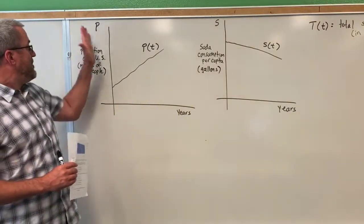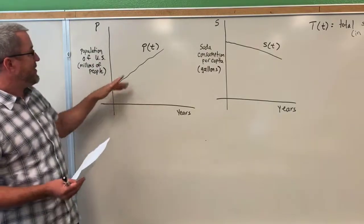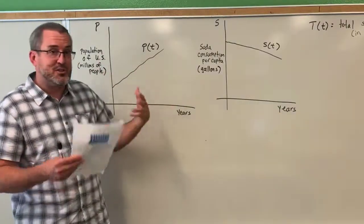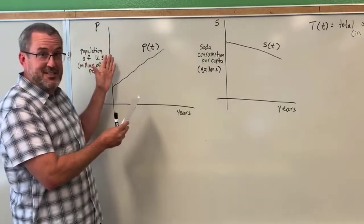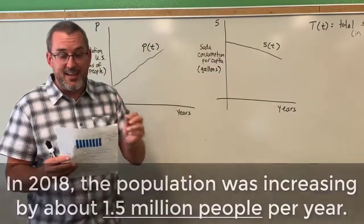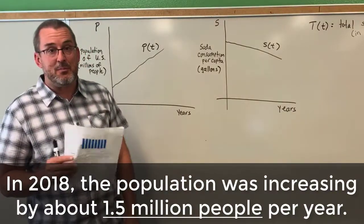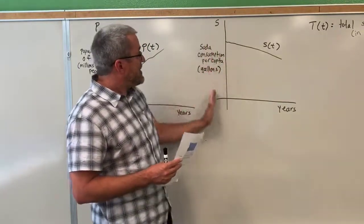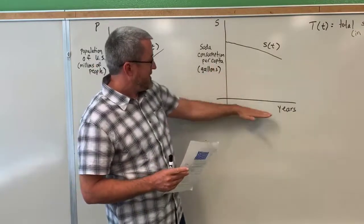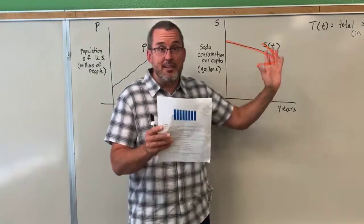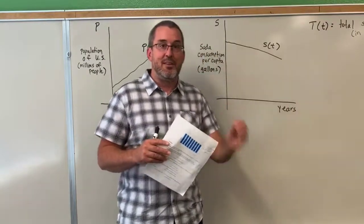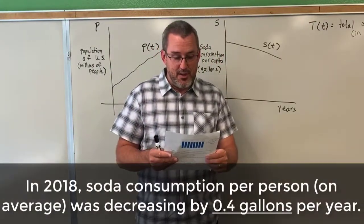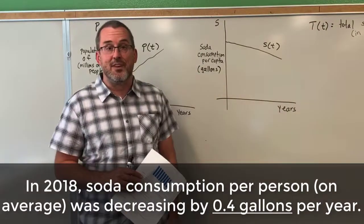Here's what we know so far. The population of the United States, as a function of time in years, is an increasing function. It's not important that we know exactly what the function is — whether it's linear, exponential, or quadratic. The important fact is that the function exists and it's increasing. What we do know is that in 2018, the population was increasing by about 1.5 million people per year. Also, soda consumption per capita as a function of time is a decreasing function. We don't need the exact details; the important thing is the function exists, and in 2018 that consumption was decreasing by 0.4 gallons per person per year.